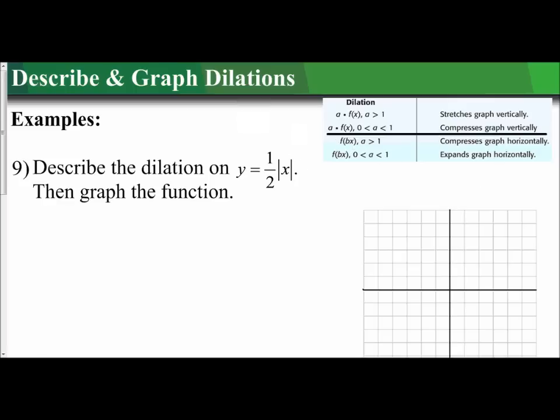Let's look at the general form for transformations of an absolute value: y equals a times the absolute value of x minus h plus k. H and k are the horizontal and vertical translations—we're not focusing on that. We're focusing on dilations, which is based off the a value. If I see y equals a times the absolute value of x, and a is one-half, since a is between 0 and 1, that means the graph compresses vertically.